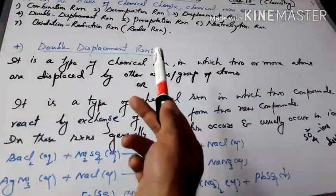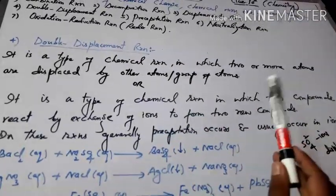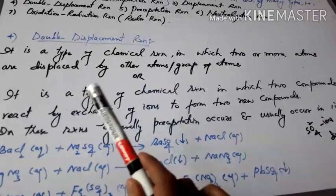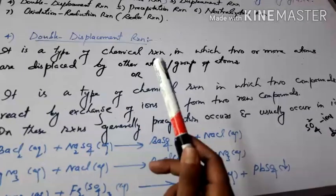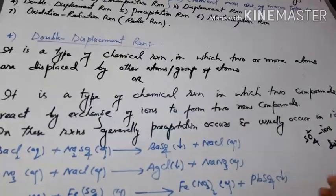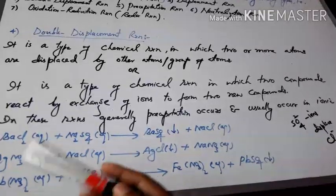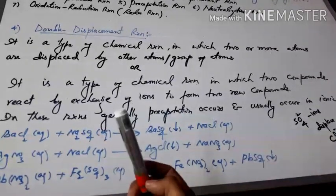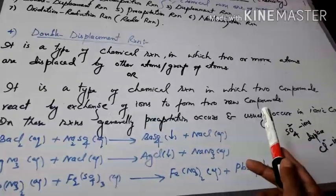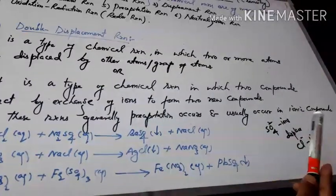The fourth type is double displacement reaction. Double displacement reaction is a chemical reaction in which two atoms are displaced or replaced by other atoms or group of atoms. Or in other words, when two compounds react or combine, they exchange their ions, which results in new substances or compounds being produced. Double displacement reaction usually involves ionic compounds.